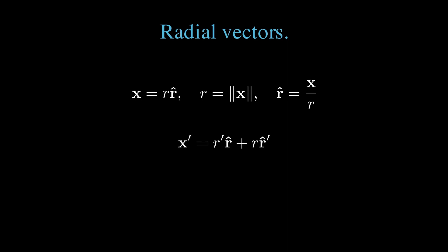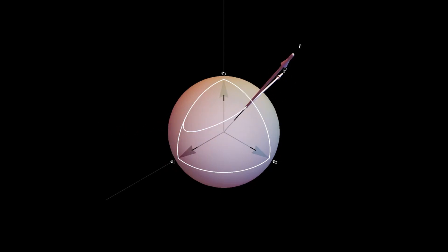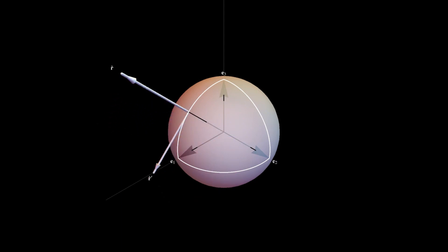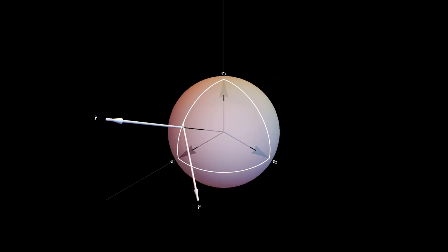The vector x prime by chain rule is r prime r̂ plus r r̂ prime. We're going to calculate r̂ prime. Here's an illustration of r̂ and r̂ prime, where r̂ prime is scaled to unity, tracing out an arbitrary path on a unit sphere. Observe that r̂ prime is always tangential to the unit sphere and perpendicular to r̂ at all points.